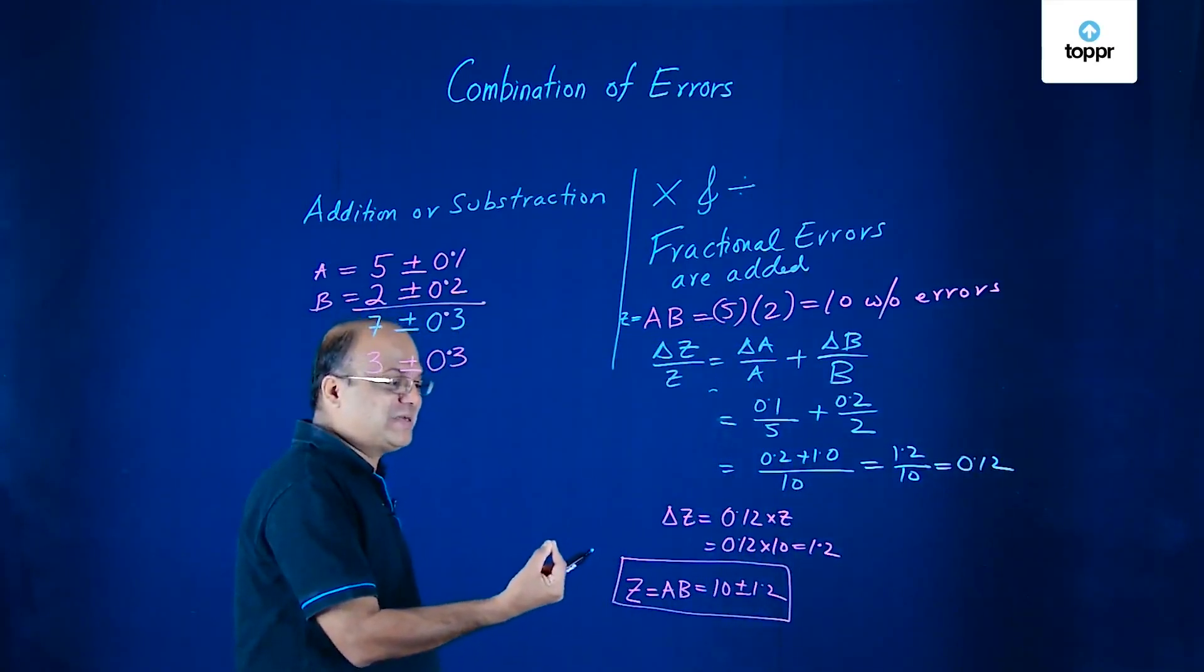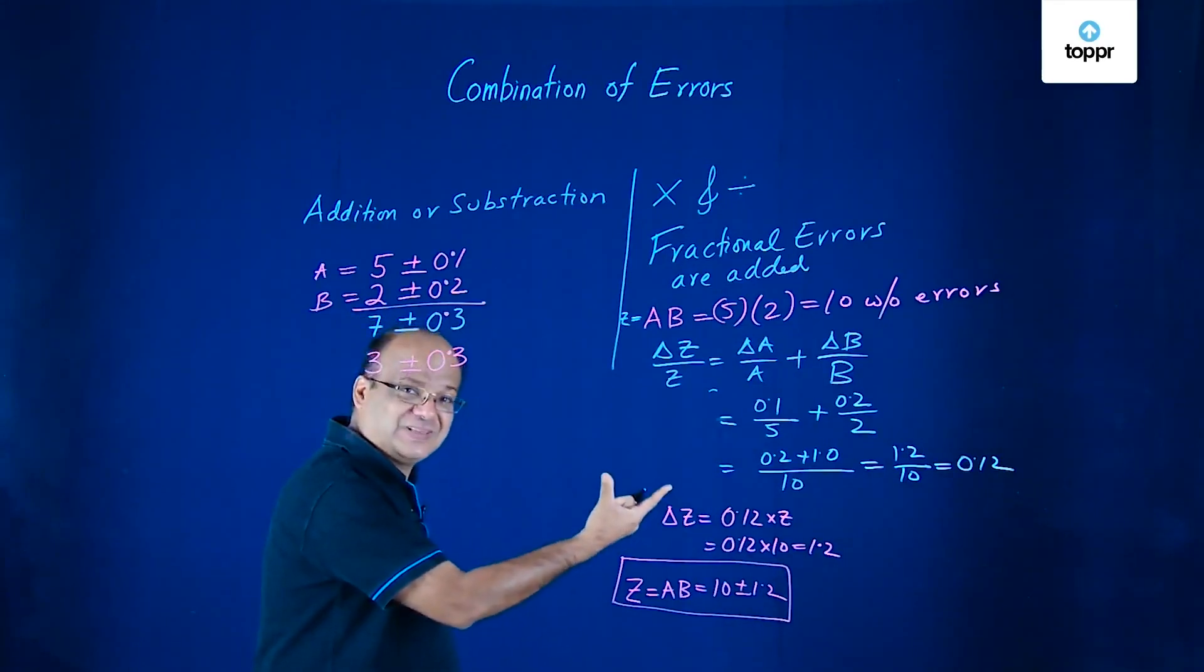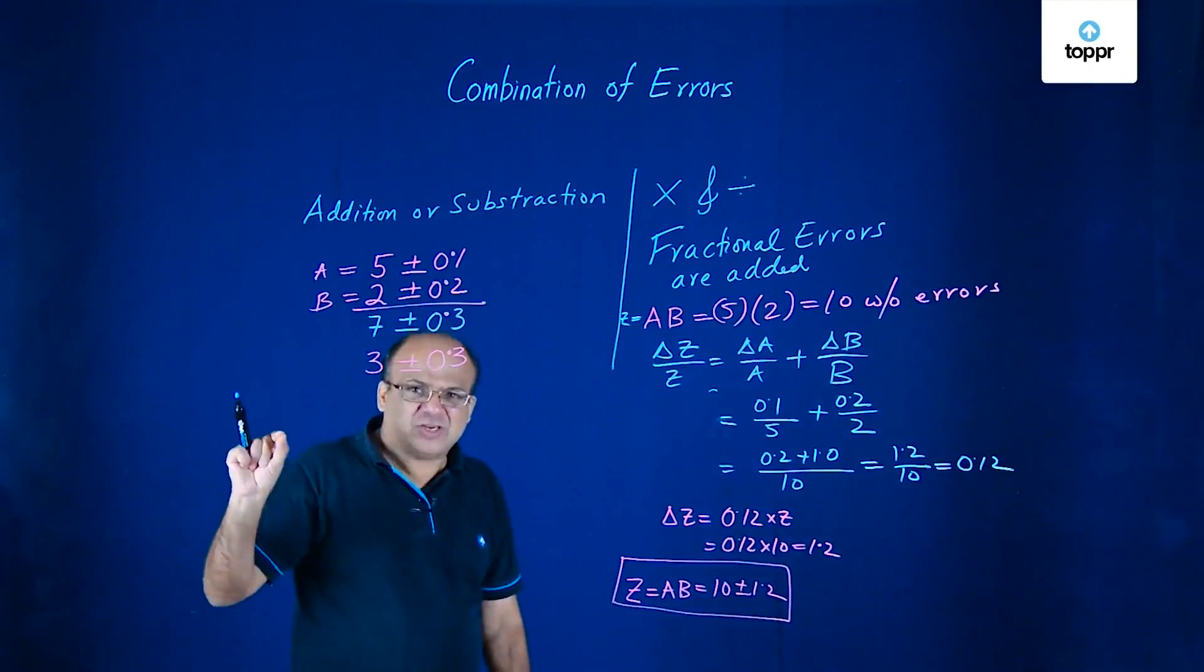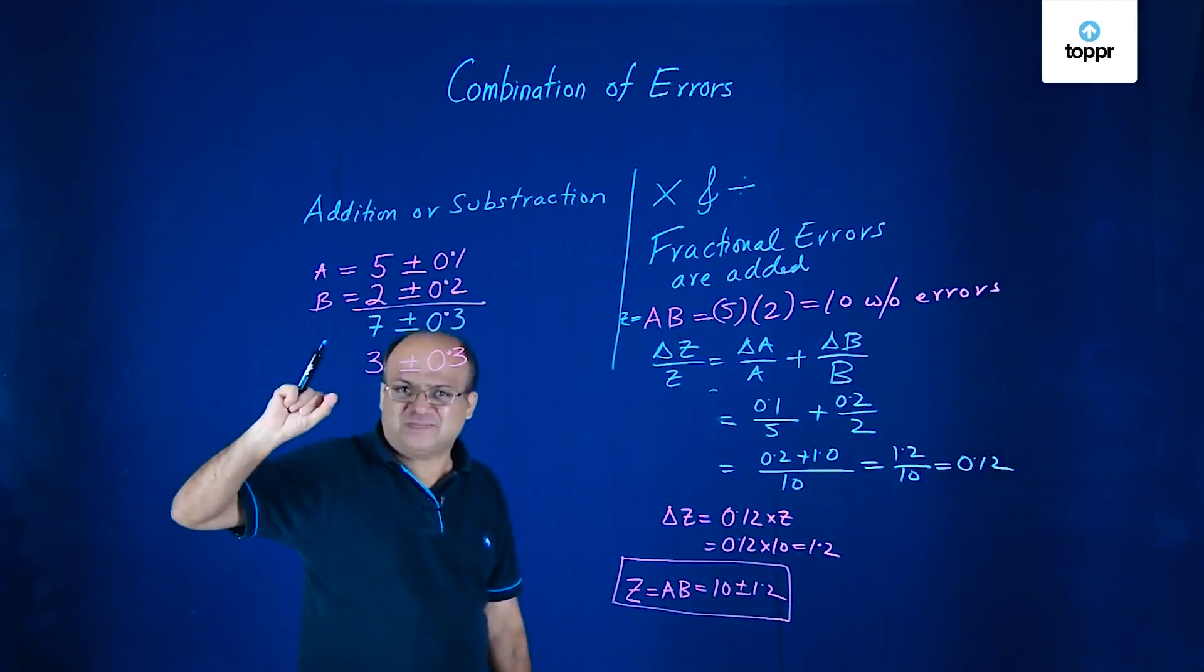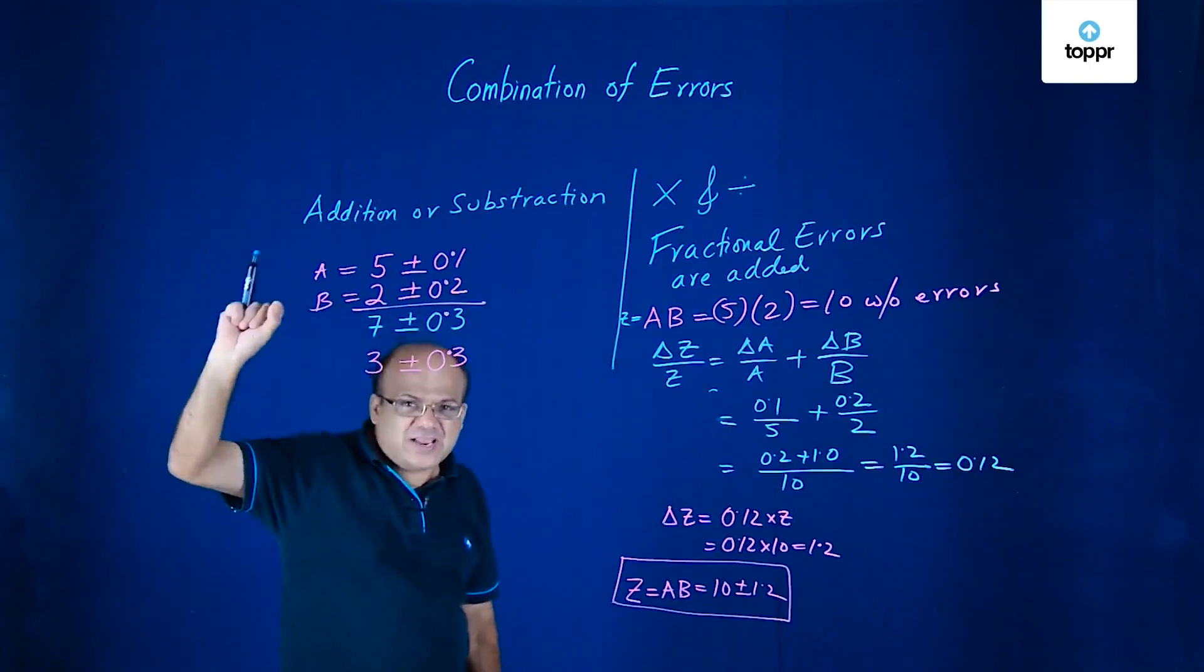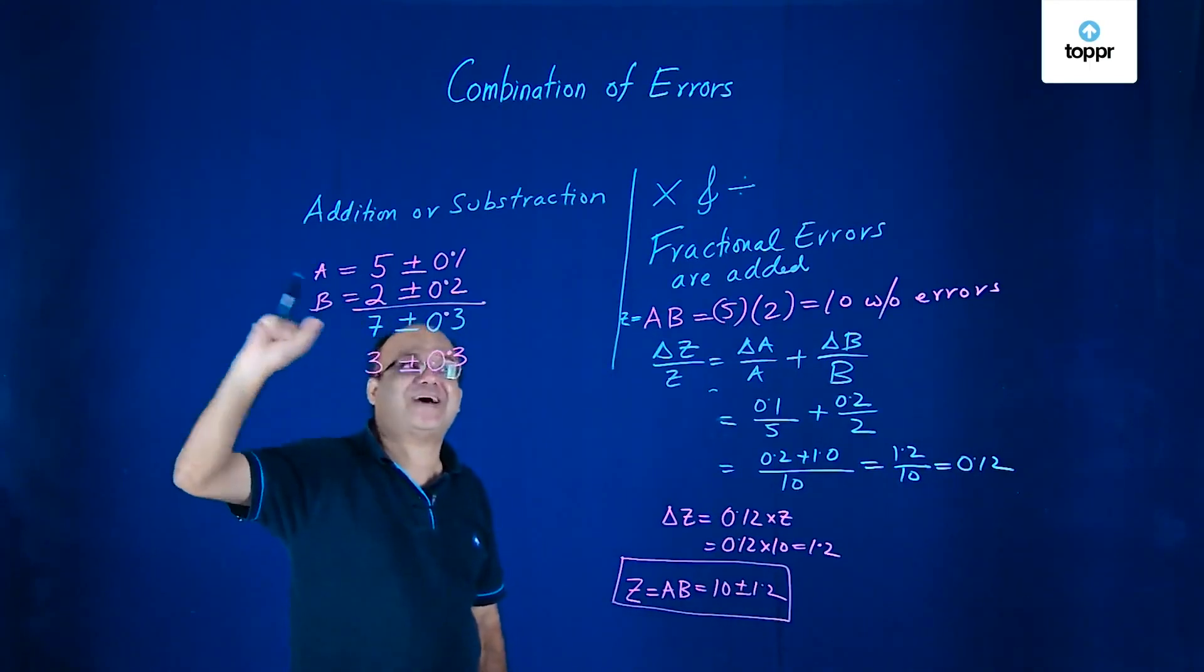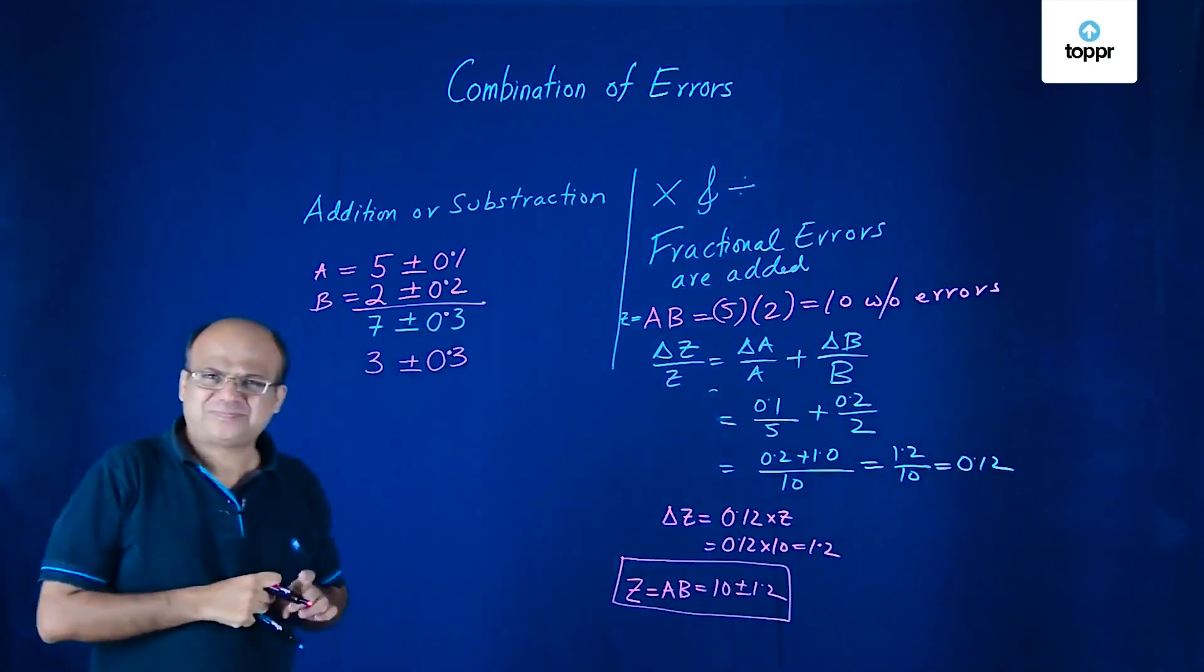So Z becomes 10 ± 1.2. So in multiplication or division fractional errors are added. And in addition or subtraction absolute errors are added.